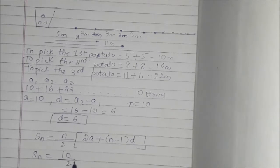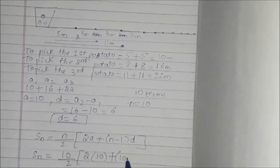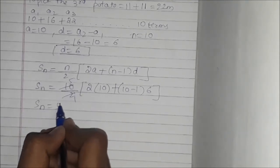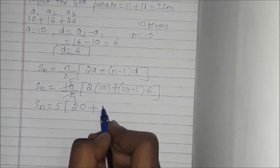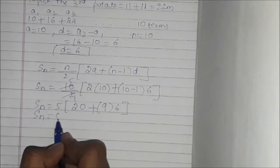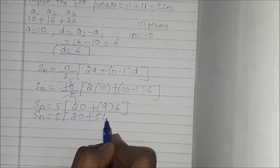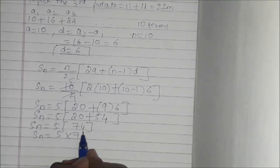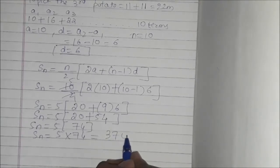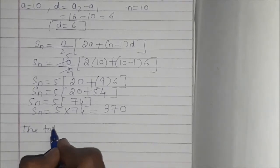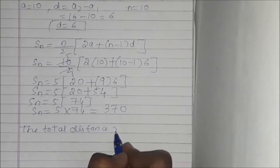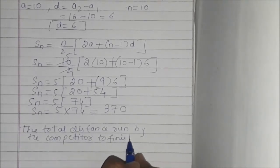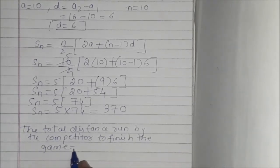S_N = 10/2 × (2 × 10 + (10 − 1) × 6) = 5 × (20 + 9 × 6) = 5 × (20 + 54) = 5 × 74 = 370. Therefore, the total distance run by the competitor to finish the game is 370 meters.